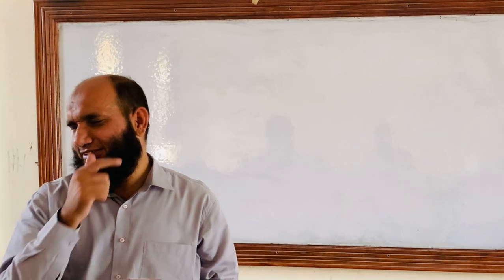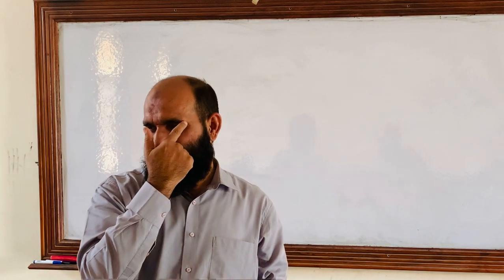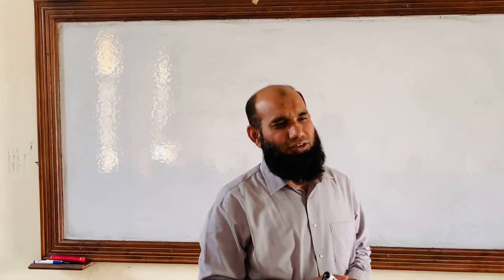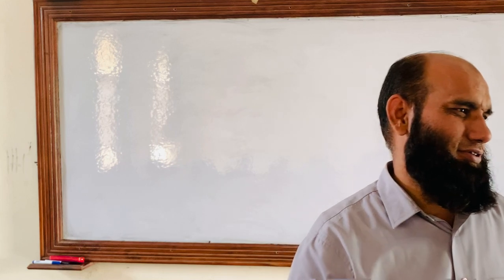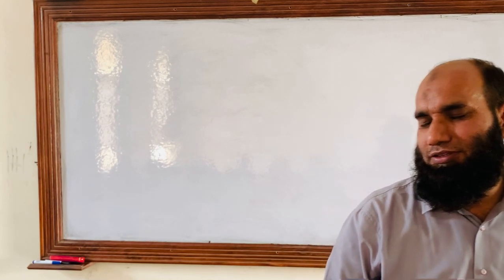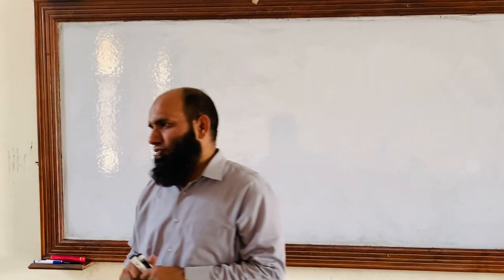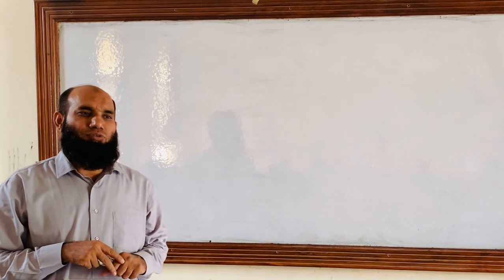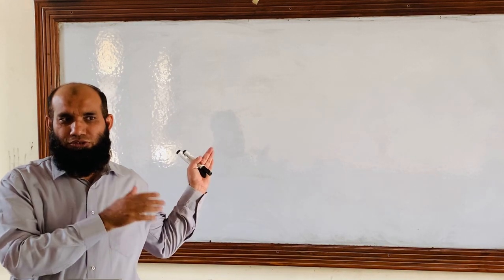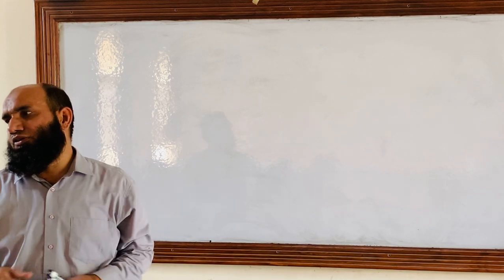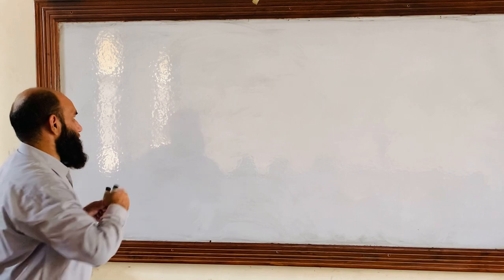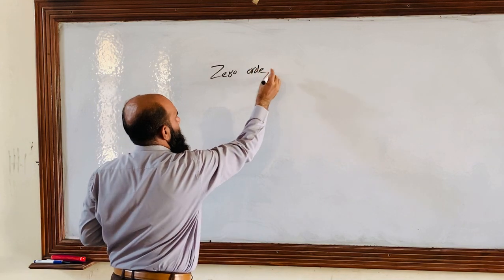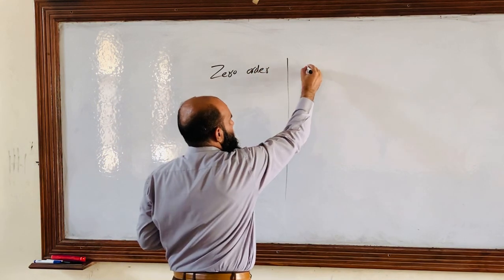Our next section is the comparison of zero order and first order. In this class we will learn at least eight to nine comparisons of zero and first order. We need the basic concept of first order in pharmacokinetics, but we should also know what zero order values are and what the difference is in the form of first order.